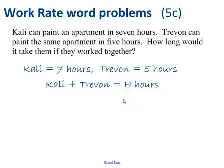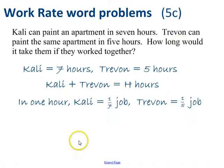I always try to use a letter that helps me to remember what the units are. So together, Kali and Trevin will add up to a total of H. And remember, the question was, how long would it take? So that makes sense that I'm calculating this in hours. Well, this is the key point to get, or one of the key points.